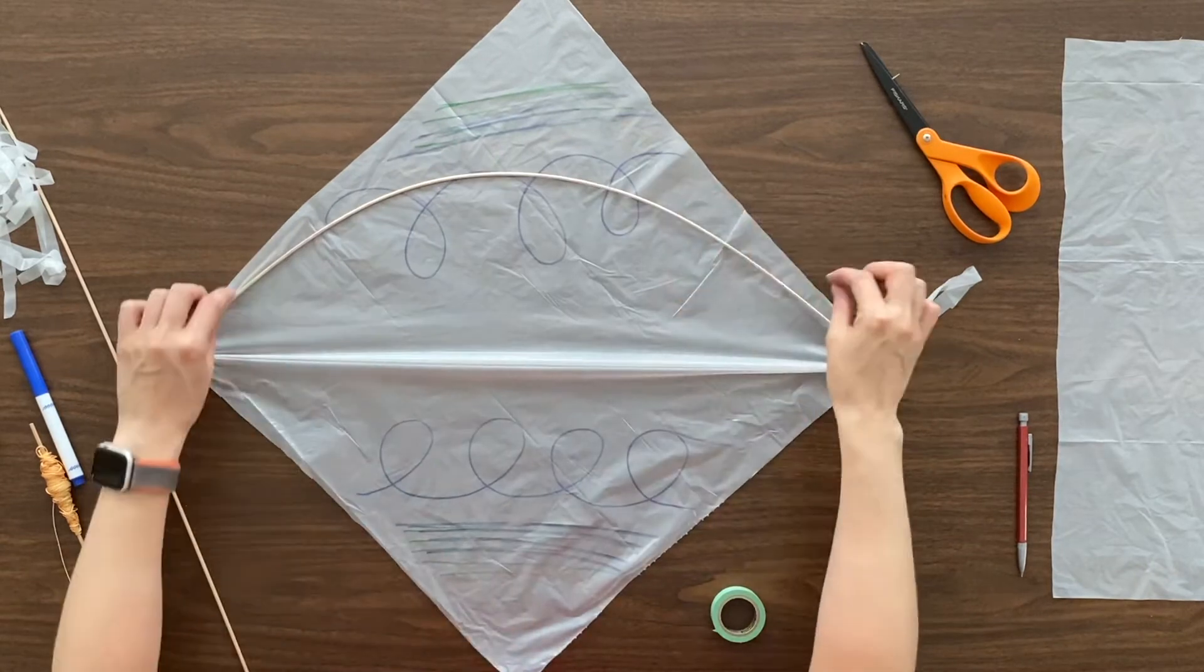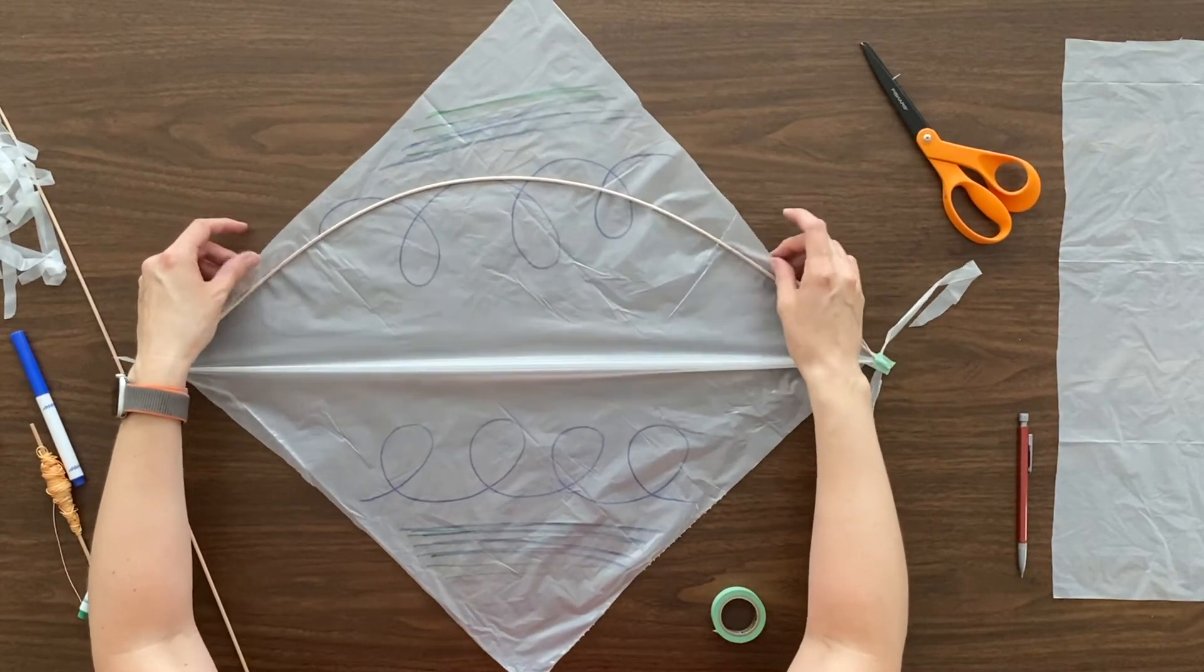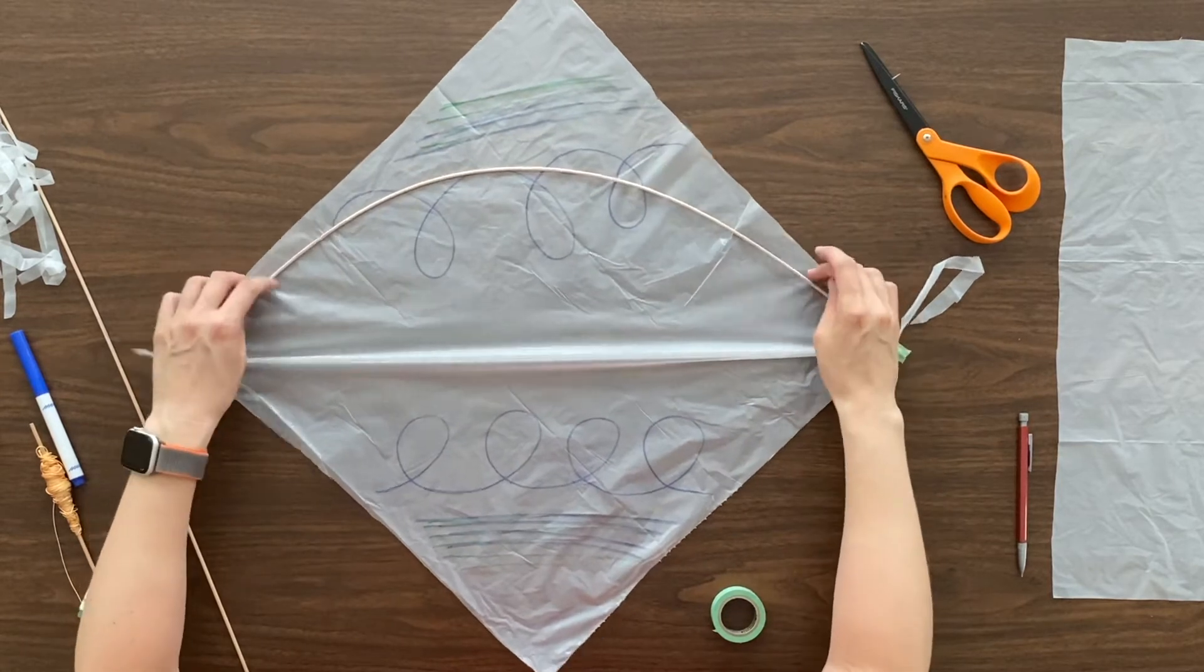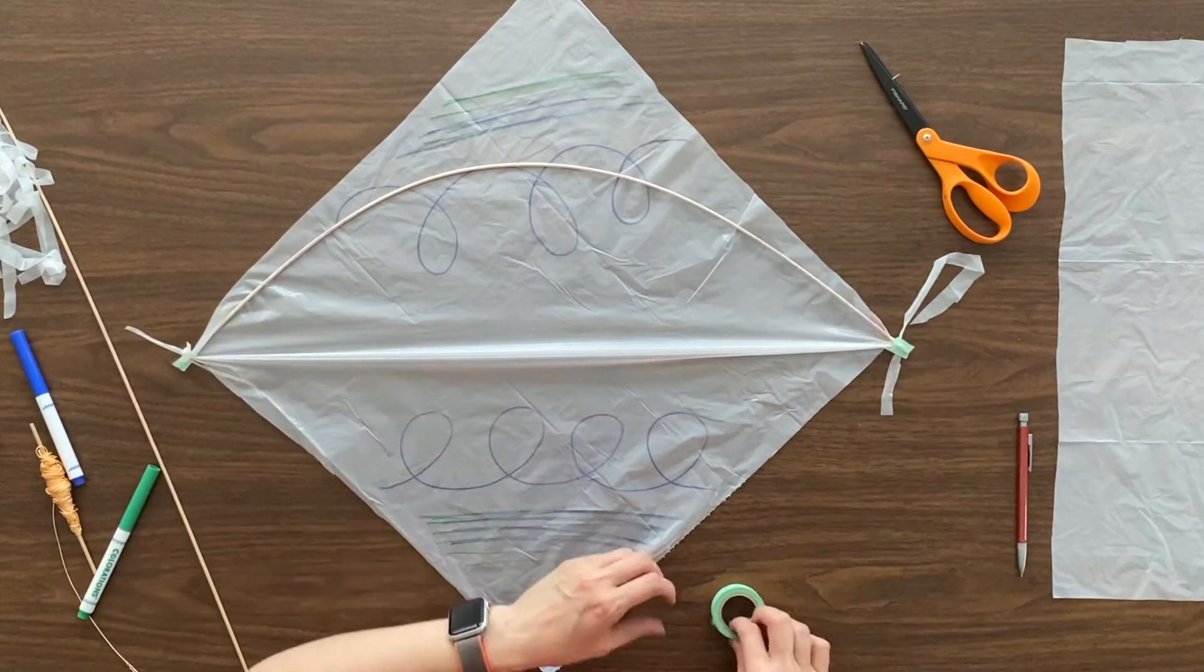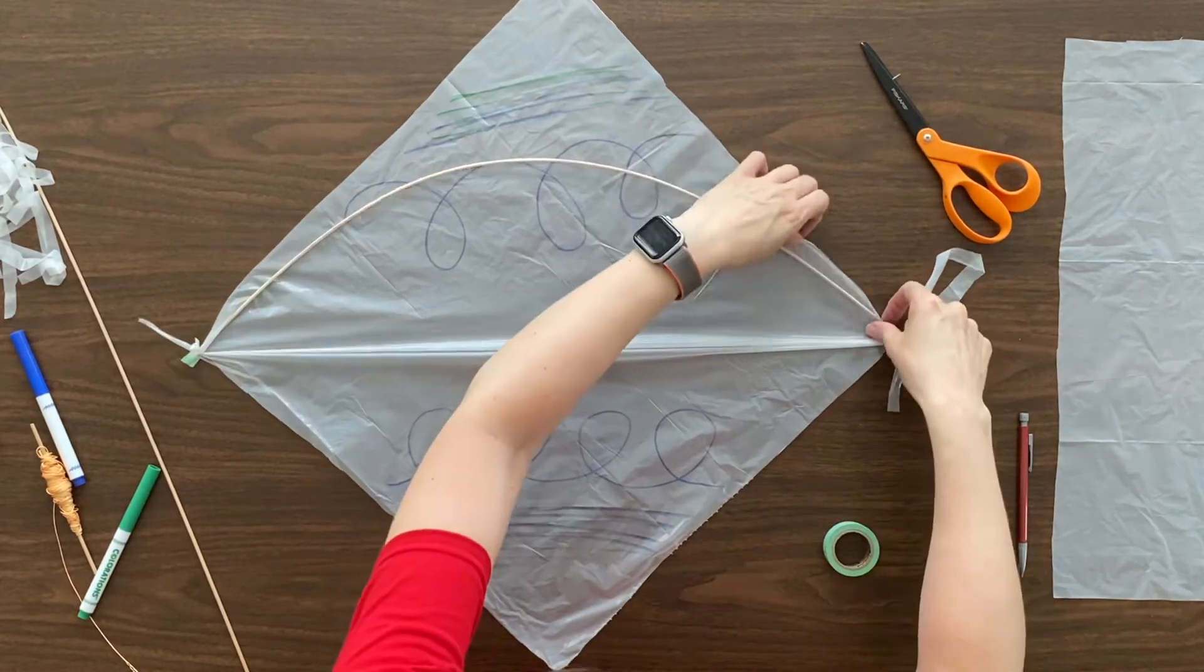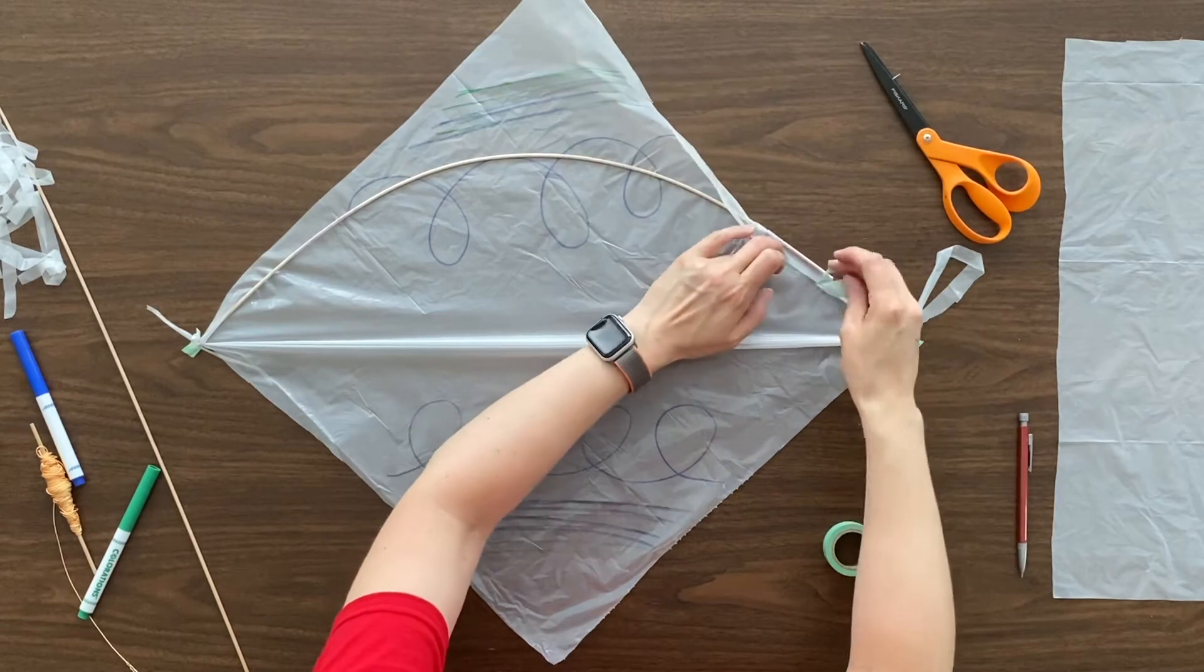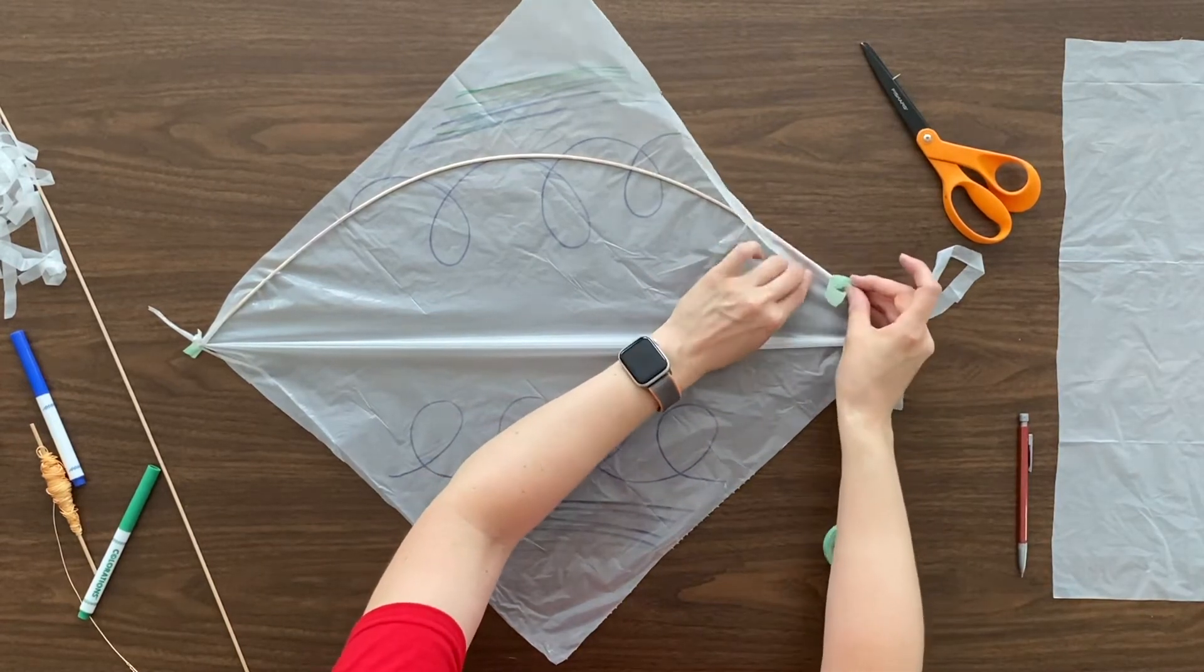Okay, now you have this curved dowel, and you see that the top of your plastic diamond is kind of hanging over the sides of that. We can also make this secure by taking more tape, just kind of folding that plastic over the dowel and taping it.